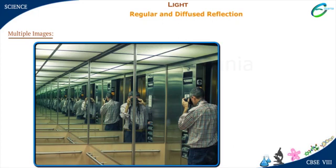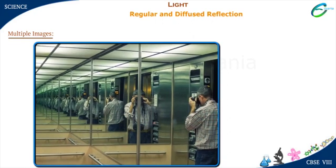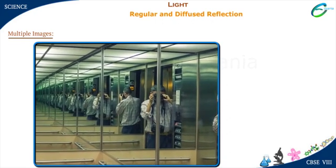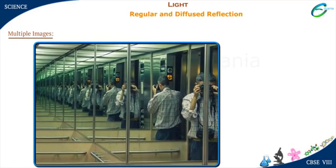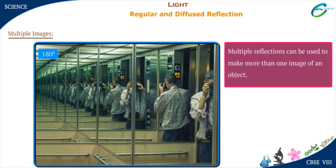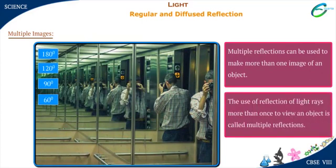Multiple reflections can be used to make more than one image of an object. To make multiple images, we must keep two plane mirrors inclined to each other at various angles like 180 degrees, 120 degrees, 90 degrees, 60 degrees, etc. The use of reflection of light rays more than once to view an object is called multiple reflections.